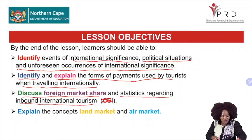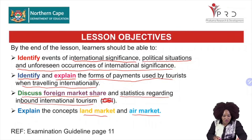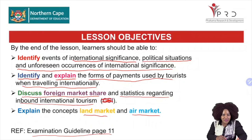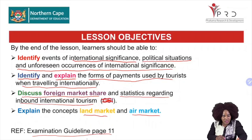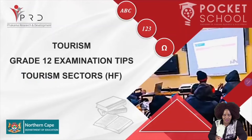You must also be able to explain the concept of land market. Grade 12 learners, this content is taken from page 11 of the examination guideline. It is very important for you to know what content is in the examination guideline, so that you know exactly what you are going to be examined on, what you need to study, and what you can leave out. You are being guided by the examination guideline — that is very important.